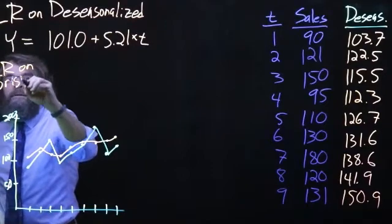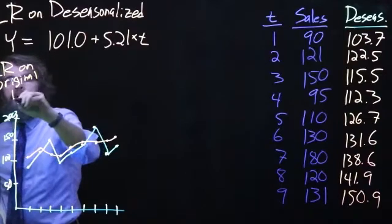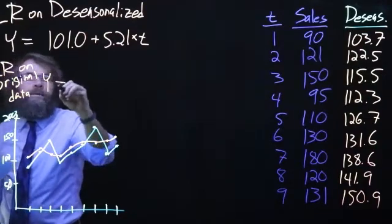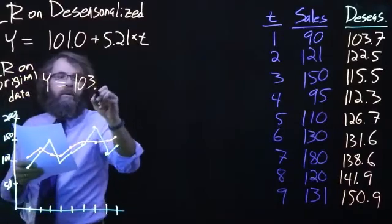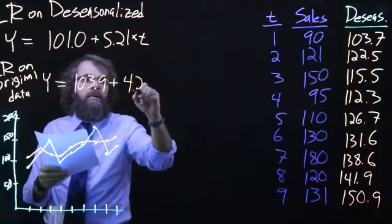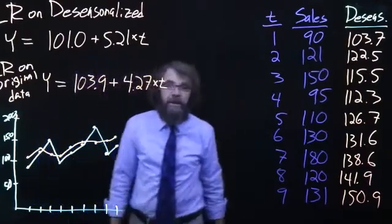If you do the linear regression on original data, what do we get? Well, we get that y is equal to 103.9 plus 4.27 times t.